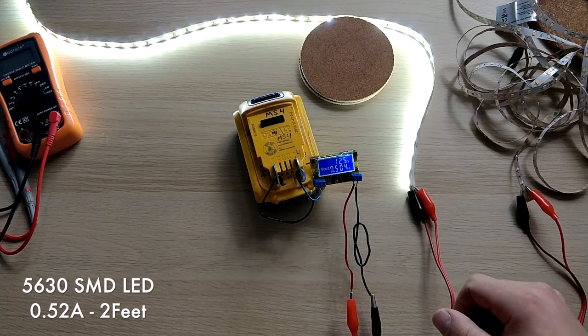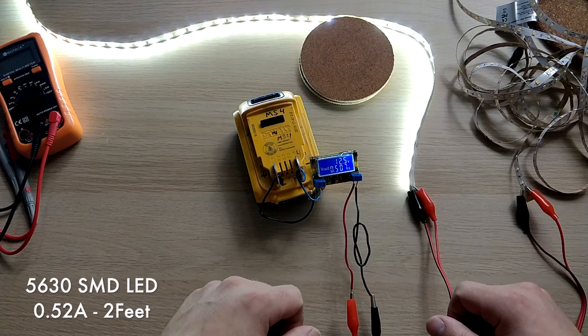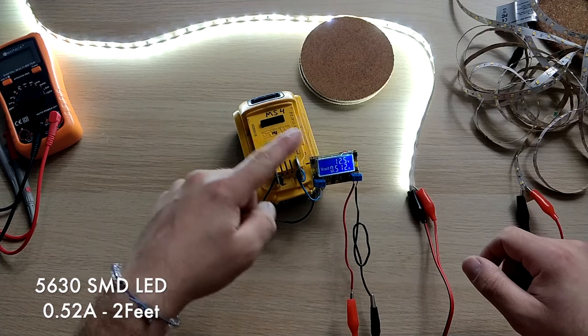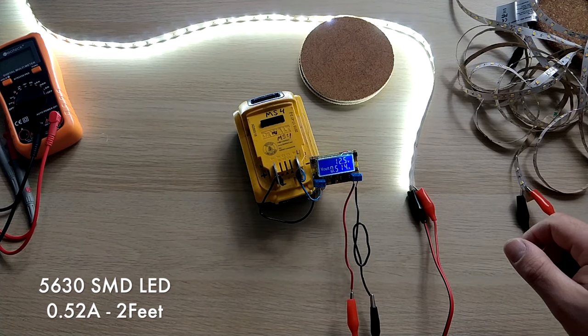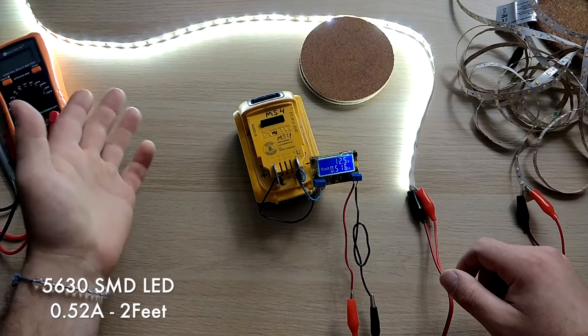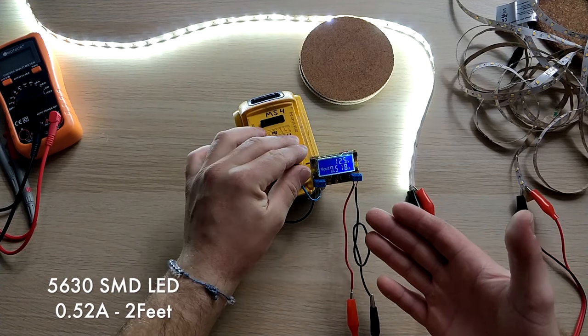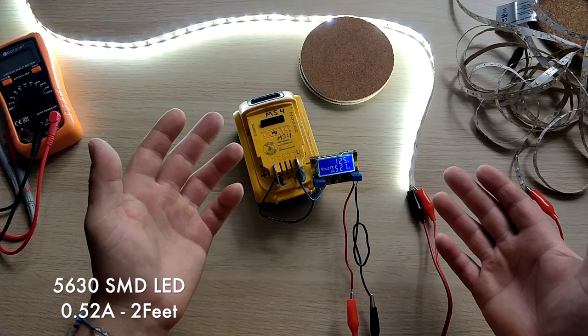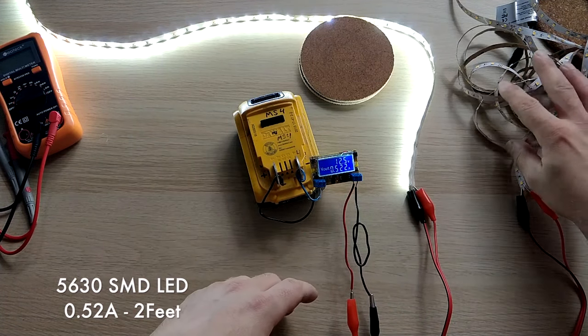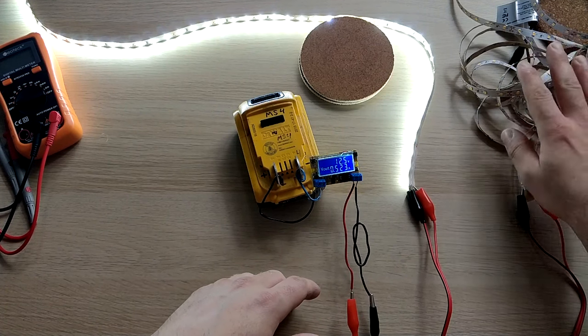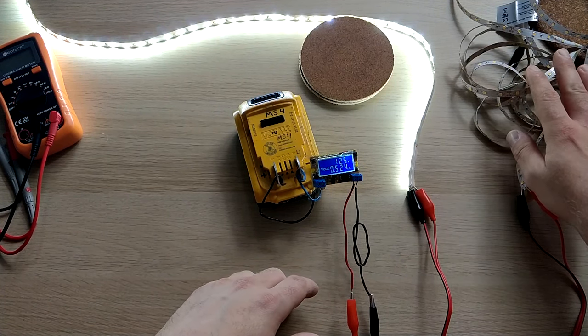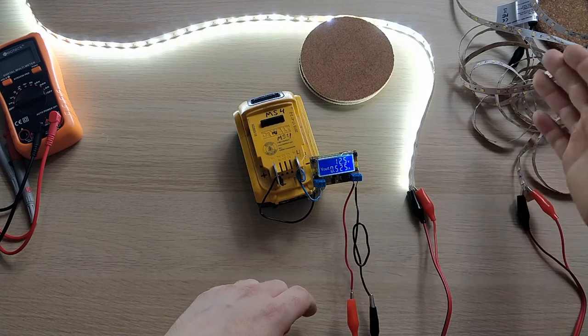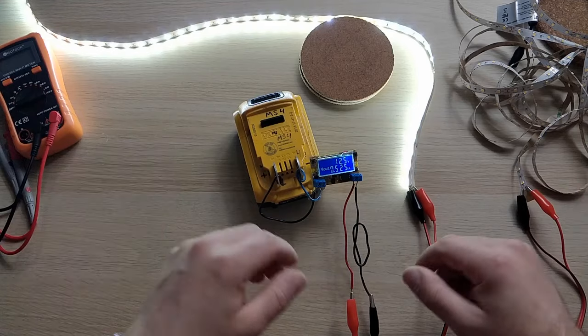There you go. So right now it's drawing 0.5 of an amp, which is quite a lot depending on a two-foot strip. To have the same amount of battery and battery life, how long I can have these LEDs running, it would probably be the same that I can run a five-meter strip, which is 16 feet. So definitely a 16-foot, even if those lights are not as bright as this, but definitely I will have more light coverage throughout the storage room.